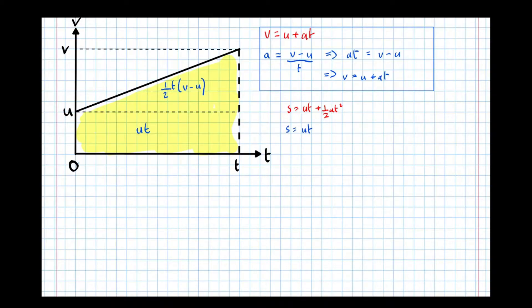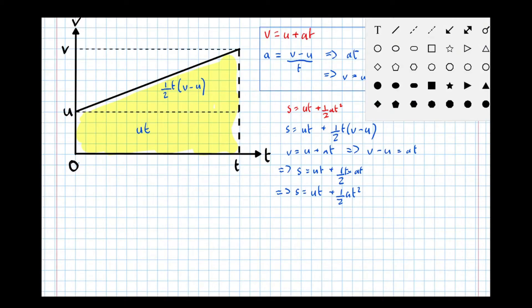So we've got that S equals U T plus a half T times V minus U. If we look back at this equation here, we'll rearrange V equals U plus A T to say V minus U equals A T. We can replace this V minus U here with A T to get S equals U T plus a half T times A T, which means that S equals U T plus a half A T squared as required. Let's put a box around that, that's that one finished.